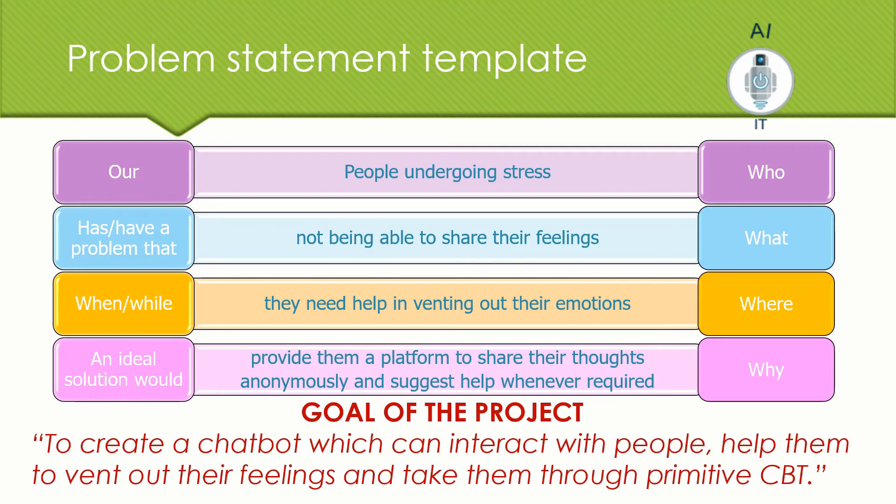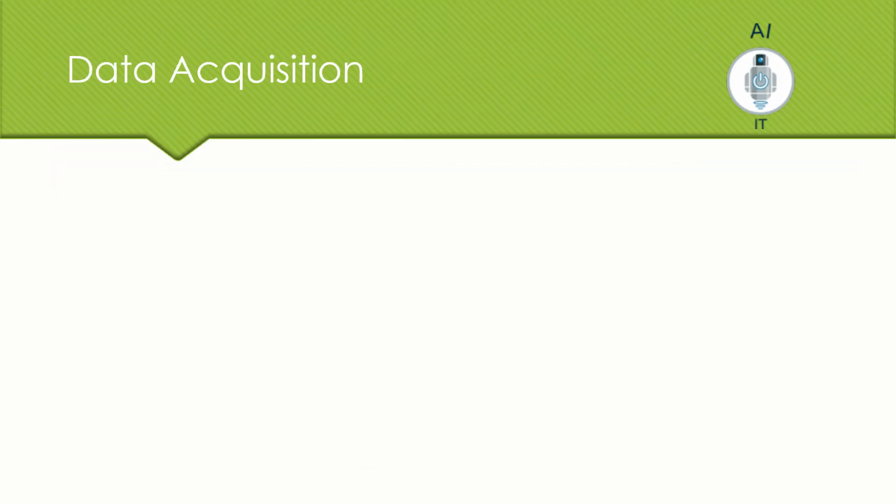Ultimately the goal of our AI project here is to create a chatbot that can interact with people and help them to vent out their feelings and take them through the primitive cognitive behavioral therapy. And this is the term that we have seen in the first stage of AI project cycle that is problem scoping. Next we move on to the second stage of AI project cycle data acquisition.